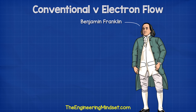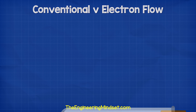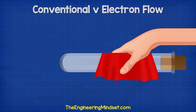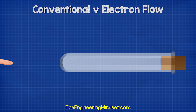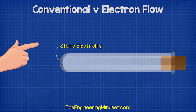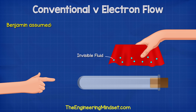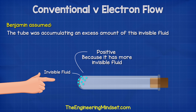When Benjamin Franklin was first experimenting with electricity, he had the idea that something must be flowing inside the materials. He was given a glass tube, and when this was rubbed with a cloth, it seemed to accumulate this strange invisible fluid. Because when someone else touched the tube, they received a small shock. We now know this as static electricity.